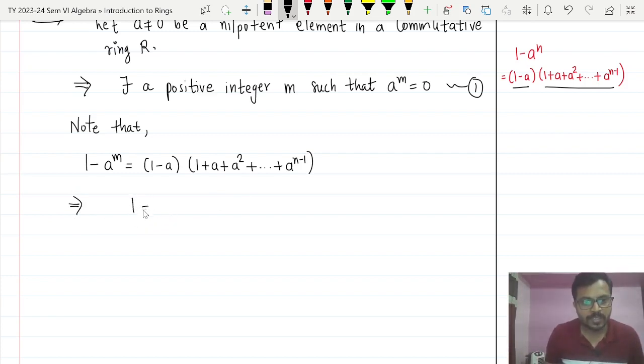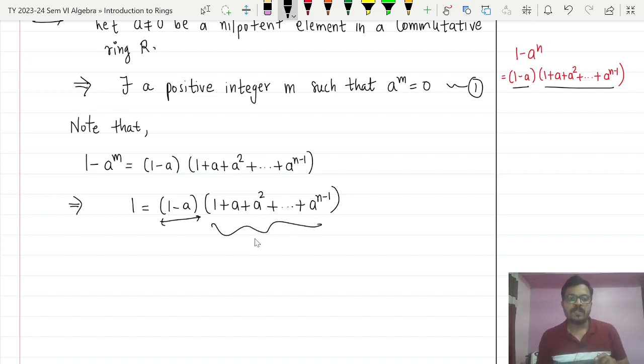So what will it imply? 1 is actually equal to 1 minus a times 1 plus a plus a square plus so on plus a raised to n minus 1. So what we have proved here? We have proved that we are able to find an element such that 1 minus a into this element is actually equal to 1.